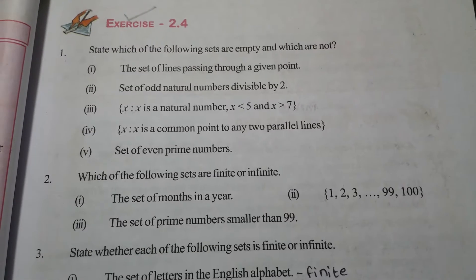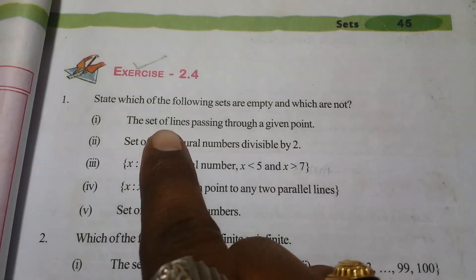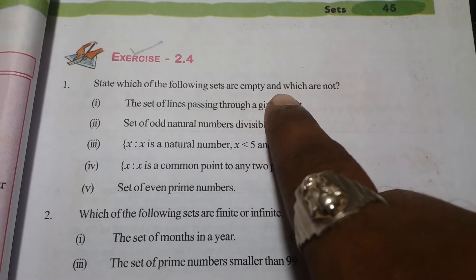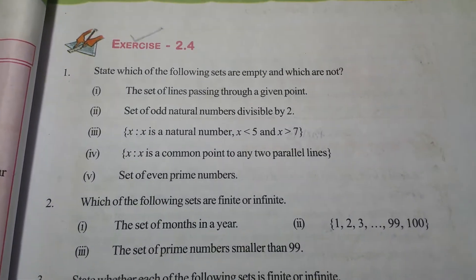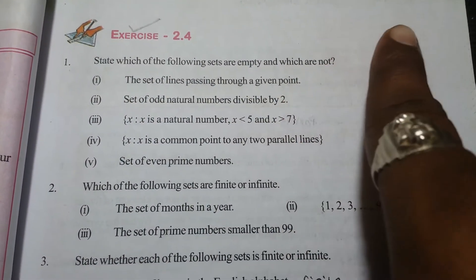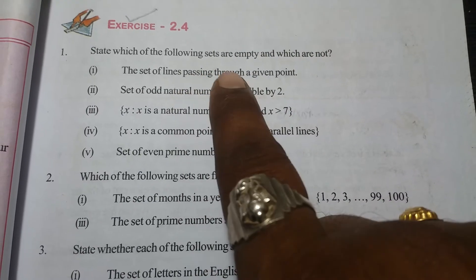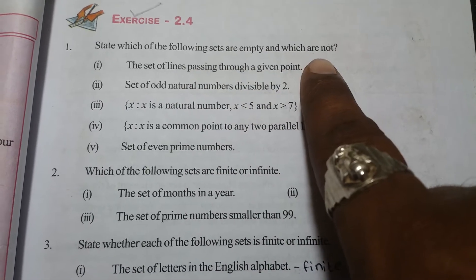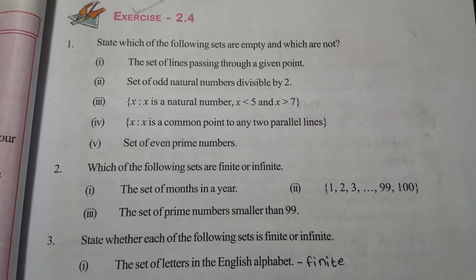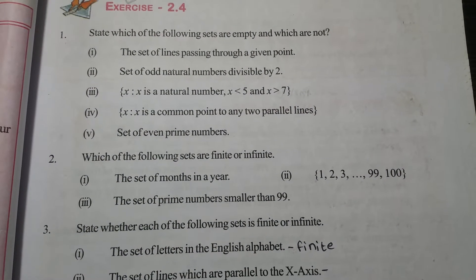Exercise 2.4. State which of the following sets are empty and which are not. The set of lines passing through a given point is not an empty set, as we can draw infinitely many lines through a given point.